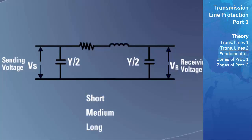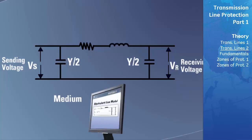The pi model was historically used by the protection engineer to represent medium-length lines. However, by using this representation of the line in addition to computer-aided software now readily available, the protection engineer can accurately calculate all required values for both medium and long transmission lines. This data simplifies the protection engineer's task in performing fault calculations to set up the distance protection within a relay.